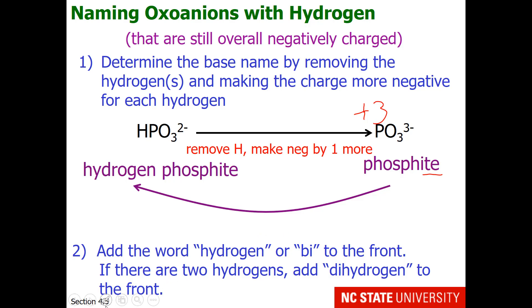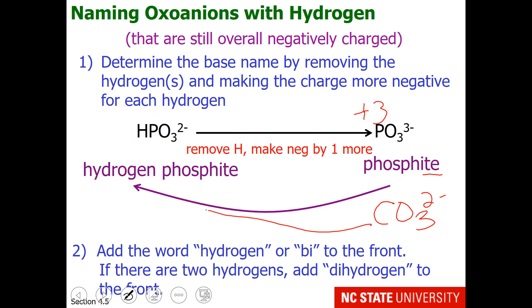If there are two hydrogens, you would call it dihydrogen phosphite. A familiar example is sodium bicarbonate — baking soda. Carbonate is CO3 2−, so bicarbonate is HCO3 1−. We made the charge more negative by one when removing the hydrogen, so going back we make it more positive by one, giving the bicarbonate ion.